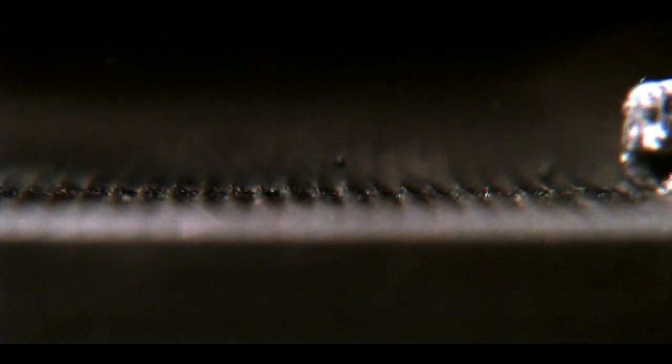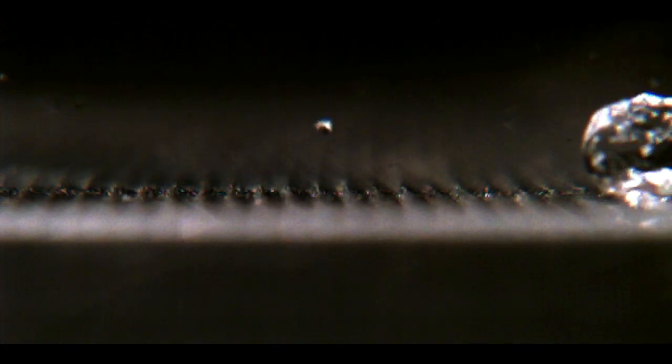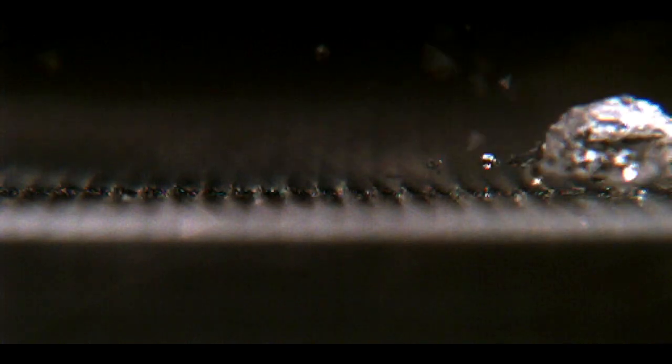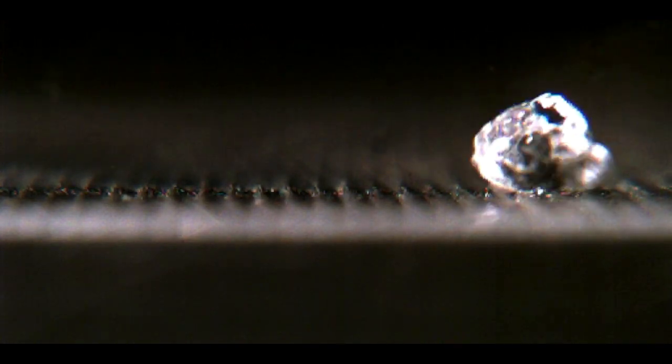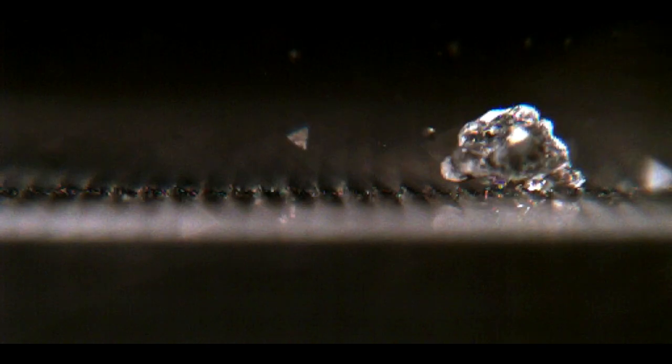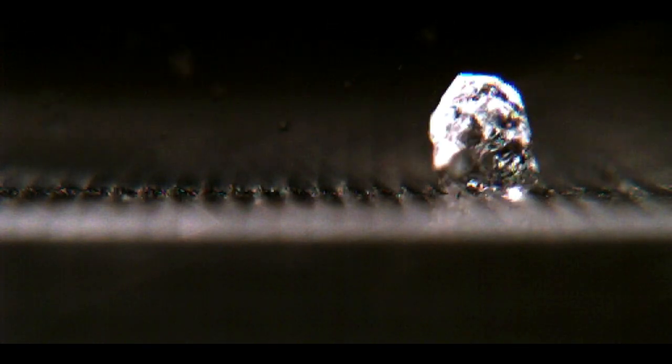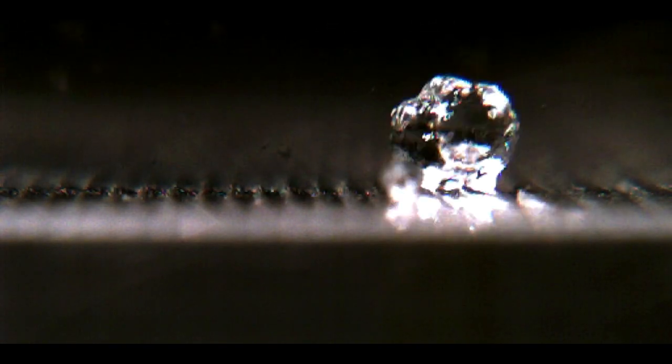In this super slow motion video, we can view the Leidenfrost effect in a slightly different way. Here, a drop of water has been placed on an extremely hot surface. When the water droplet touches the hot surface, some of it boils away, forming a layer of gas beneath the droplet.